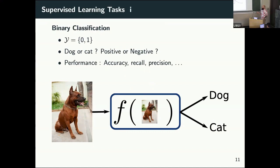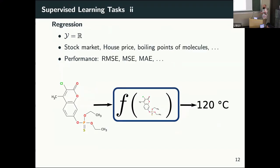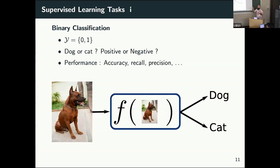For binary classification — let's say we have images of dogs and cats — we feed that to the model and want it to predict dogs or cats. We encode this as Y being the set of zeros and ones: dog is zero and cat is one, and we penalize when the model makes a mistake. We can also do regression — for example, given a molecule, predict its boiling point.